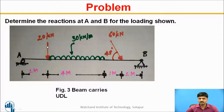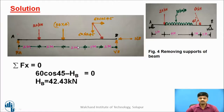Your first step is to remove this particular UDL and convert it into a point load. This is your problem statement — removing the supports of the beam. You remove the roller support and the hinge support, and also mention the point load equivalent for this particular UDL and the two components of this particular inclined point load.